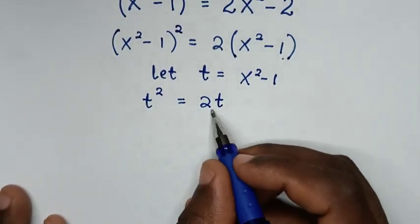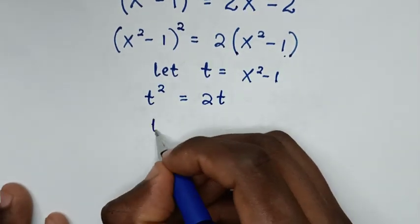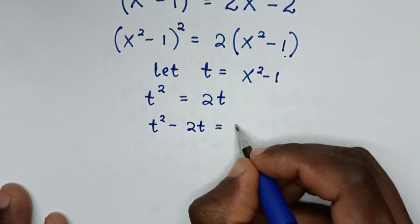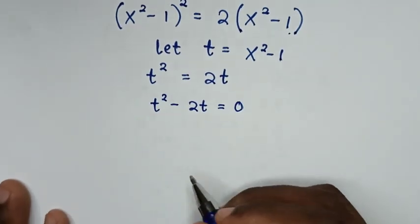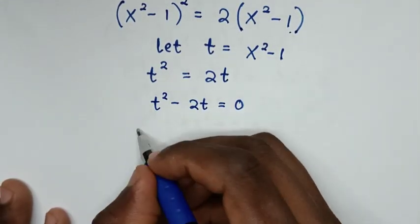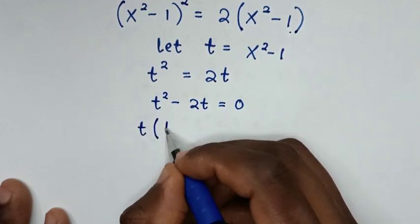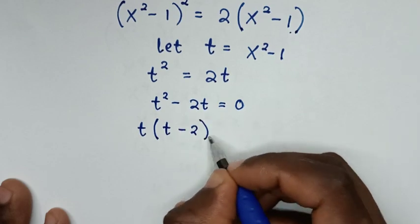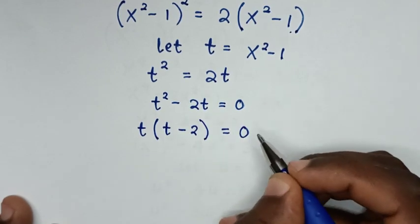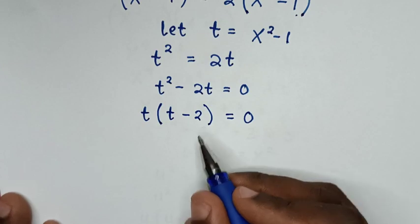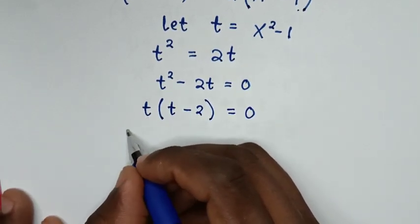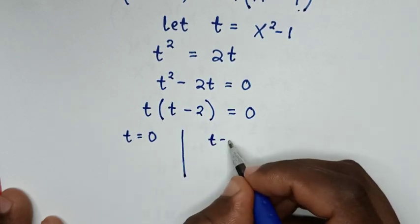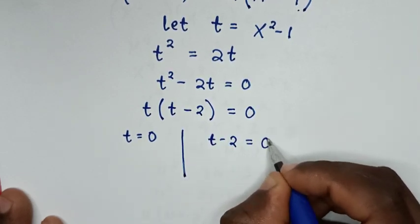Rearranging: t² - 2t = 0. Factoring out t gives t(t - 2) = 0. This gives two solutions: t = 0 and t - 2 = 0.